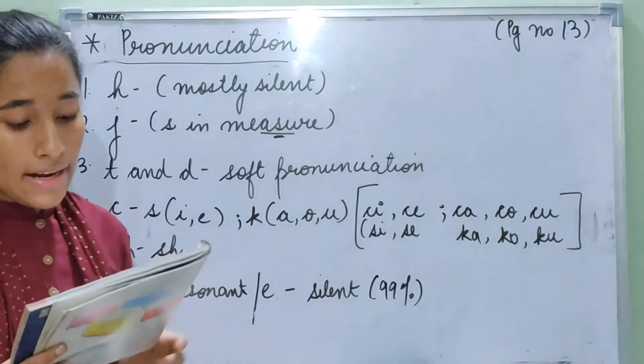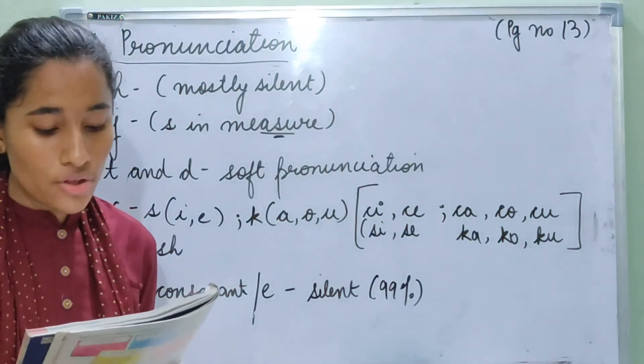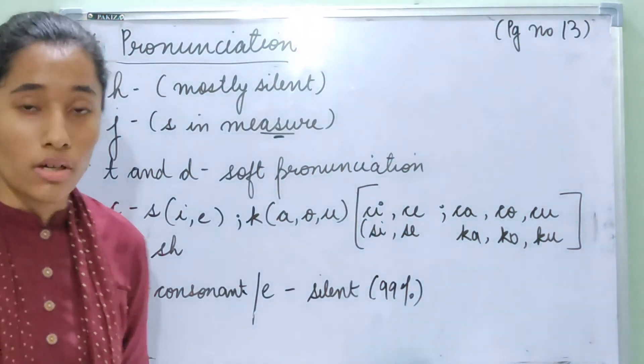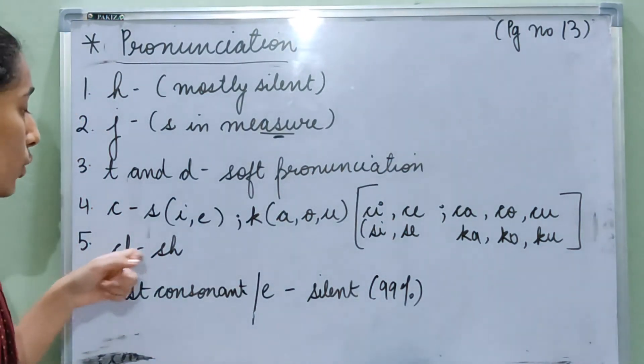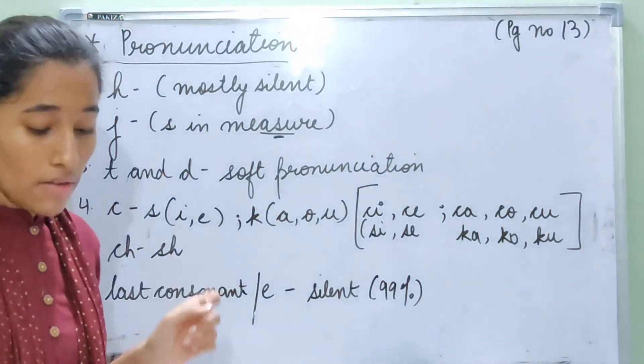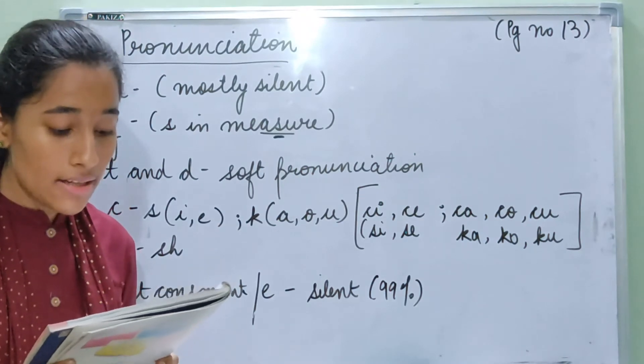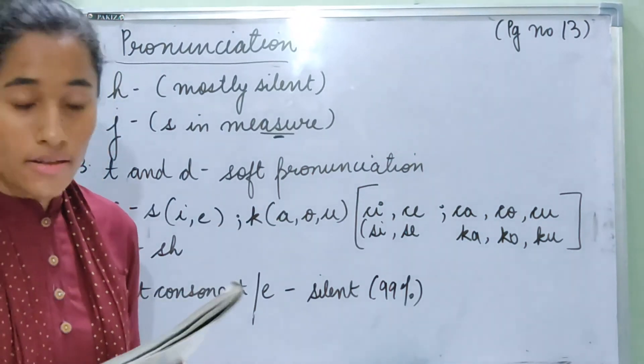Now in French, CH always has the sound of cher. So whenever you look at CH you always pronounce it like cher. For example, chaise, chateau, chantier, and chapeau.